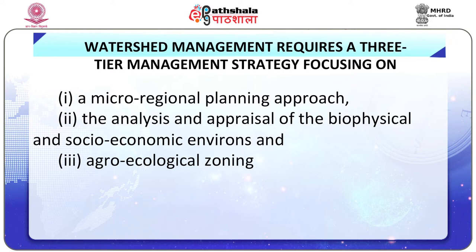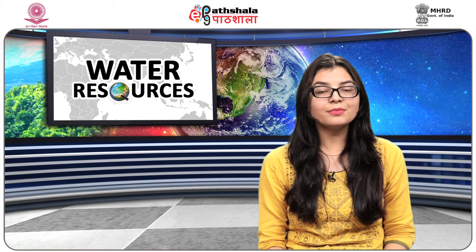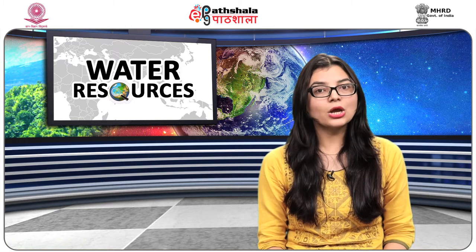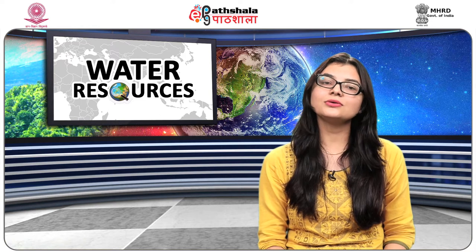Watershed management requires three-tier management strategies focusing on the nature of the watershed. First, a micro-regional planning approach. Second, the analysis and appraisal of the biophysical and socio-economic environment. Third, agro-ecological zoning. The necessity for a micro-regional approach to planning arises primarily because the actual conditions of the watershed vary depending on the local biophysical conditions, population pressure and natural resource condition.